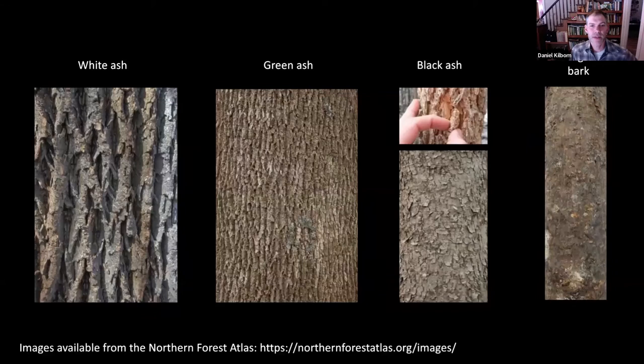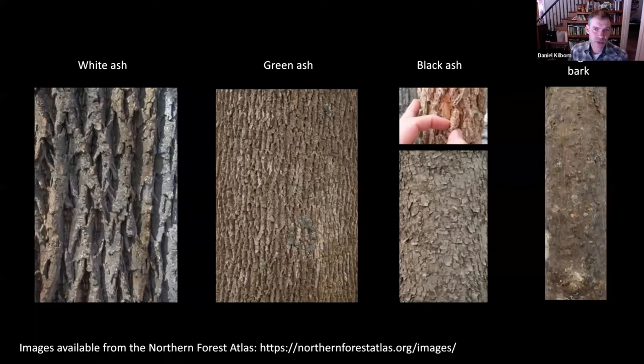Black ash bark is much different — it's really flaky, quirky, and spongy to the touch. If you find a good one in the woods, it's really one of my favorite things to grab and play with. To close: the future of ash in Vermont. Many of us know that ash is under attack by an invasive non-native beetle, the emerald ash borer. This creates uncertainty, but it is an important time to care about ash and learn to identify it for just that reason. All of our ash species will really be dramatically impacted by EAB, which is found in almost every corner of the state now.